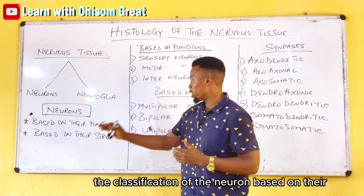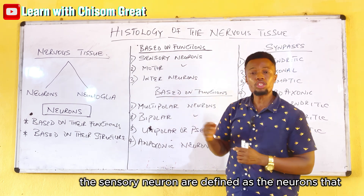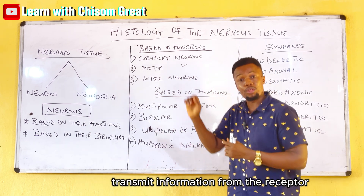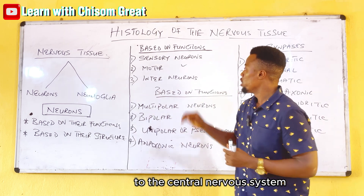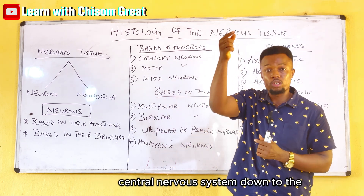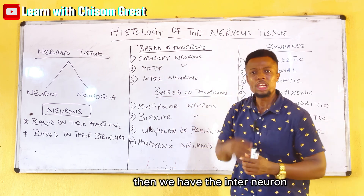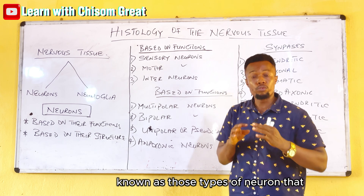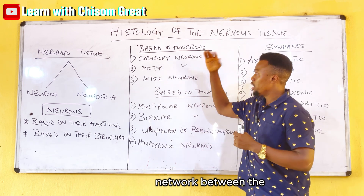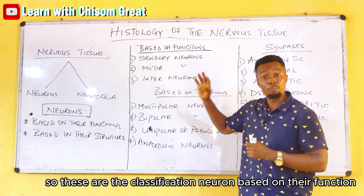The classification of neurons based on their functions: we have the sensory neuron, defined as neurons that carry or transmit information from the receptor to the central nervous system. Then we have the motor neuron, which carries information from the central nervous system down to the body. Then we have the interneuron, which forms an integrating or communicating network between the sensory neuron and the motor neuron.